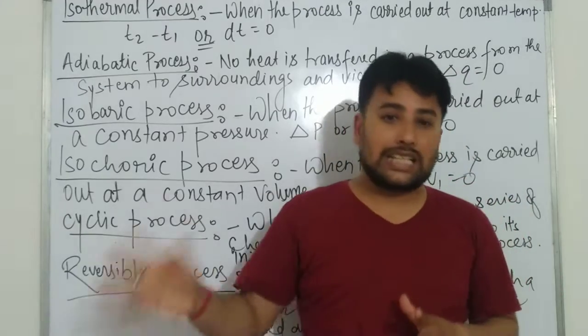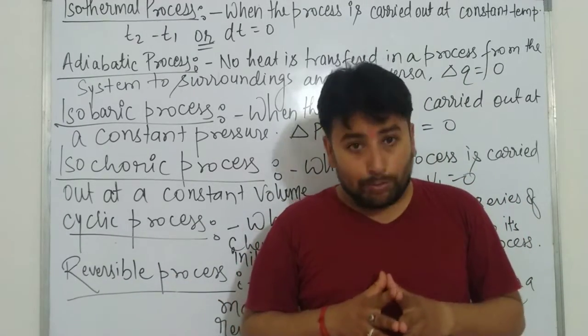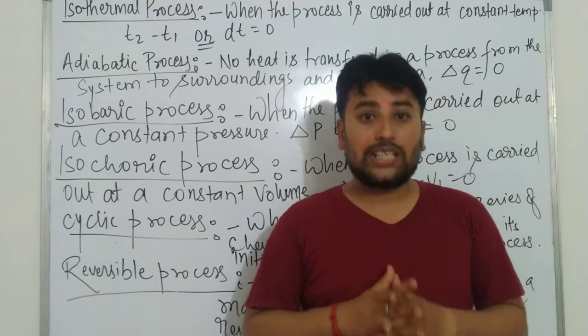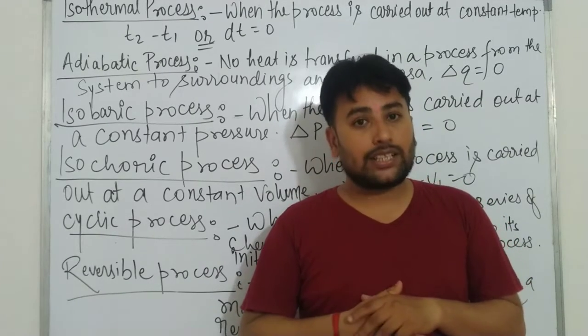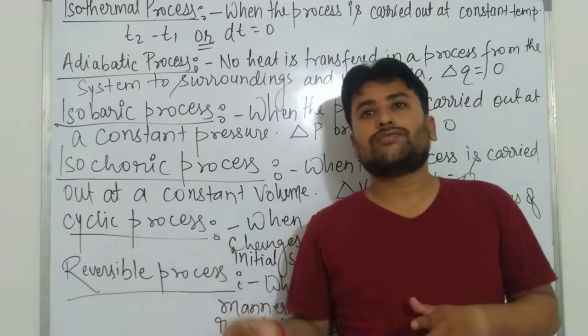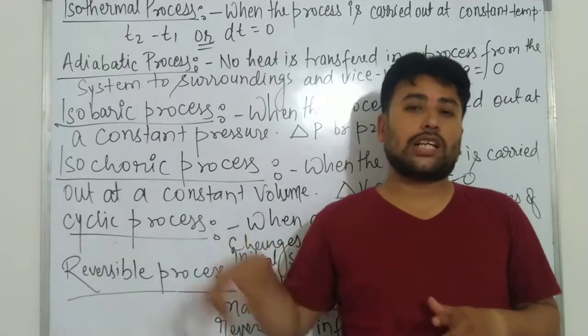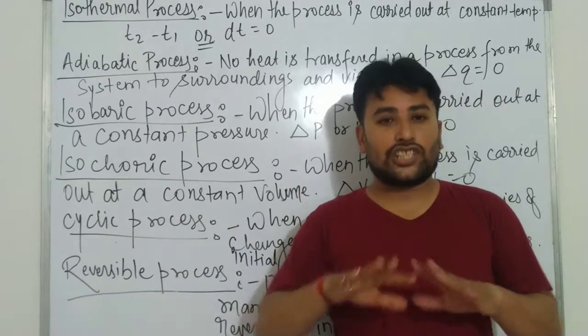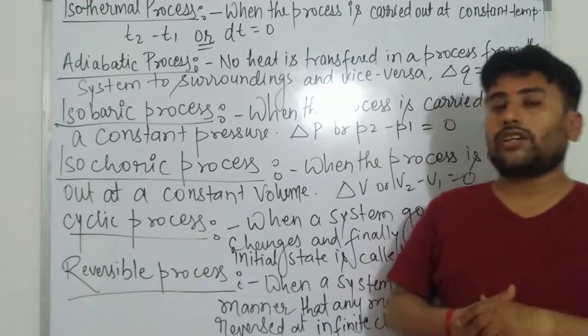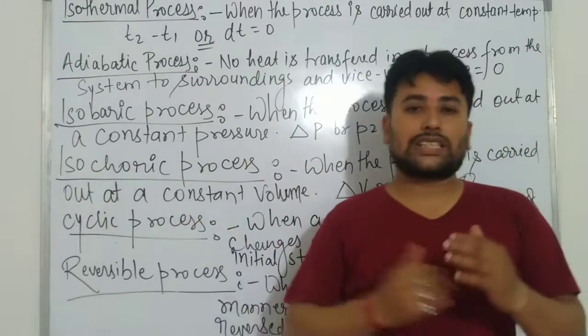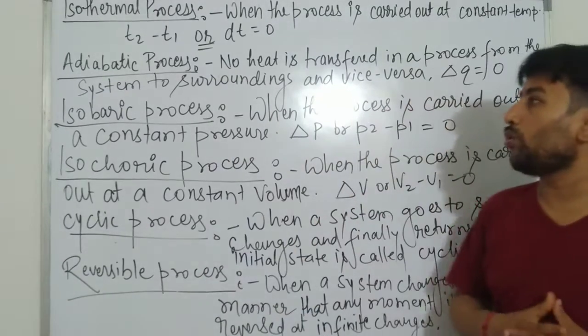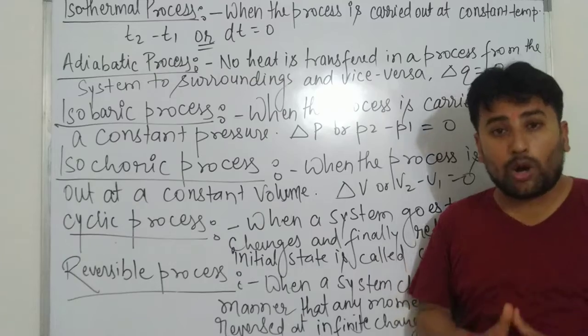Isothermal: delta T is equal to zero. Isobaric: delta P is equal to zero. Isochoric: delta V is equal to zero. Adiabatic: delta Q is equal to zero. Cyclic process means here all the changes will become zero as it returns to first initial state. And reversible process is one which can be reversed and can come back to that state. All these processes are important to remember in this chapter.